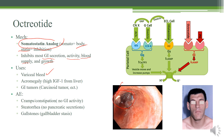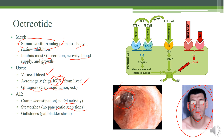Octreotide can also be used for acromegaly. Remember that acromegaly involves too much growth hormone going to your liver, which produces IGF-1. With octreotide, you can pretty much stop the production of IGF-1 and prevent the effects of acromegaly — large skin, large bones, large hands, and ultimately heart failure. It can also be used to reduce tumors like carcinoid tumors, since it will prevent growth and reduce the blood supply to these tumors. Adverse effects include cramps and constipation from decreased GI activity, steatorrhea from decreased pancreatic secretions, and gallstones because your gallbladder is not moving as much.